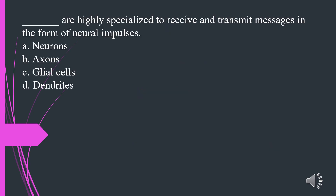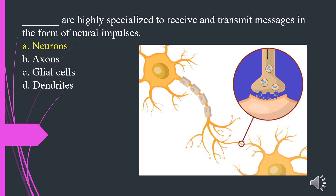What are highly specialized to receive and transmit messages in the form of neural impulses? A. Neurons. B. Axons. C. Glial cells. D. Dendrites. The answer is A. Neurons.